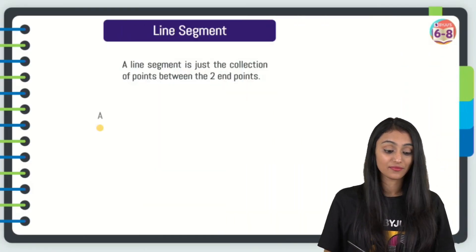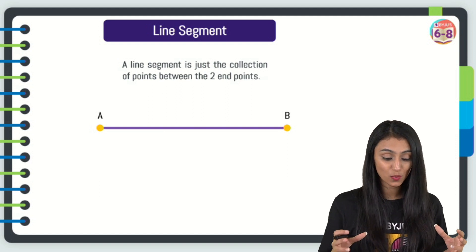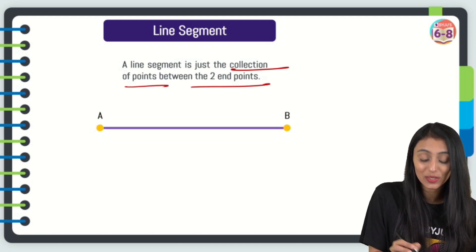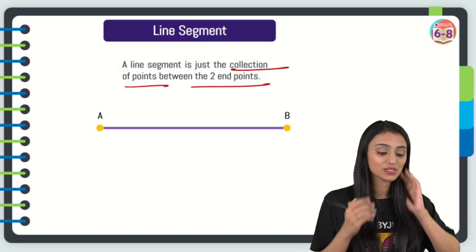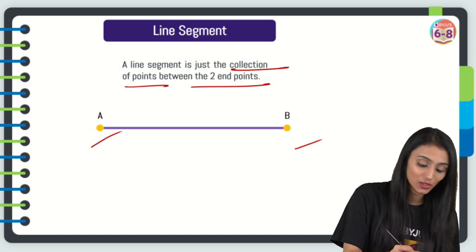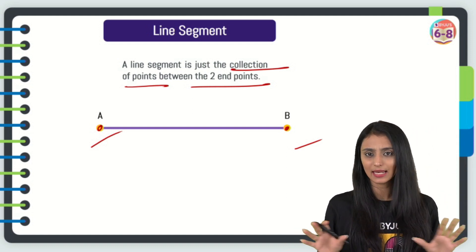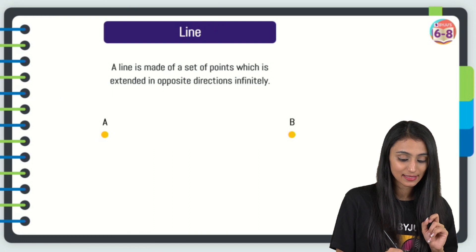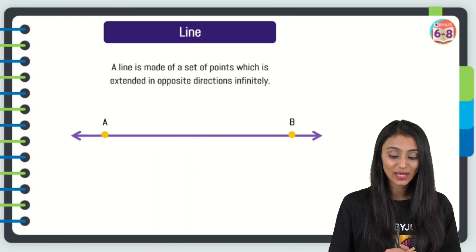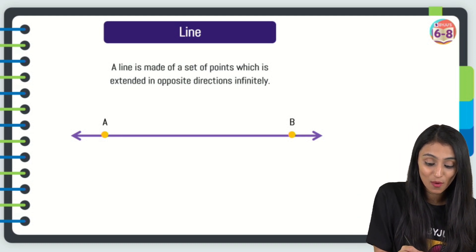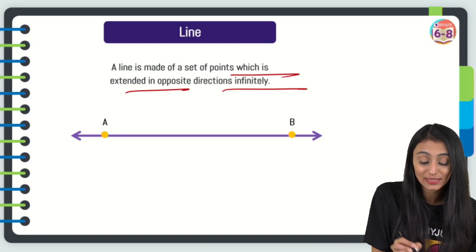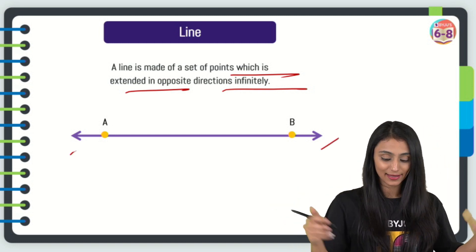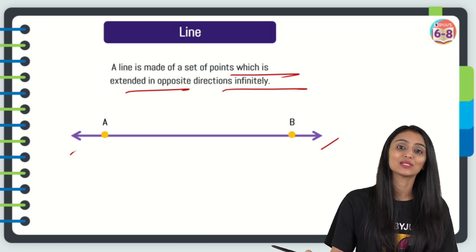If we have two points and join them, we get a line segment, because a line segment is just the collection of points between two endpoints. Looking at this AB, that's a line segment — you can see these endpoints, and I cannot extend it in any direction. But if you extend it on both sides, what do you get? You get a line. A line is a set of points extended in both directions infinitely.